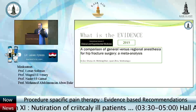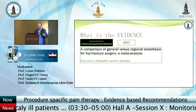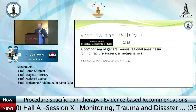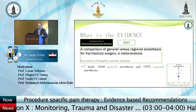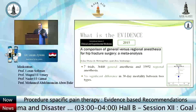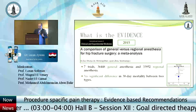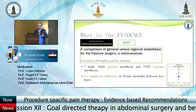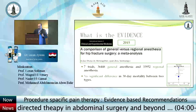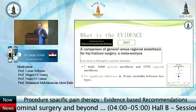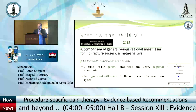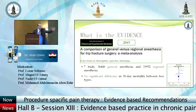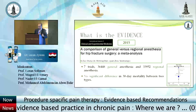In the International Journal of Clinical Experimental Medicine in 2015, a meta-analysis compared general versus regional anesthesia for hip fracture surgery, including seven trials with nearly 36,000 general anesthetic cases and 34,000 regional anesthetic cases. They found no significant difference in 30-day mortality between the two types — most lines in the forest plot were near the middle line, indicating no significant difference between both sides.